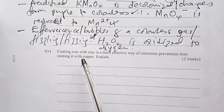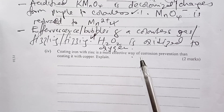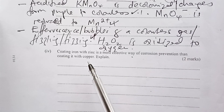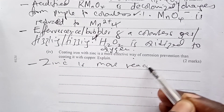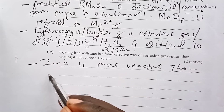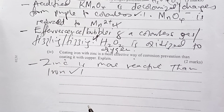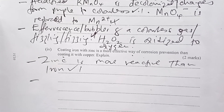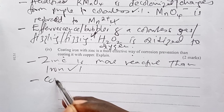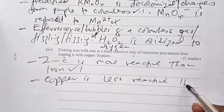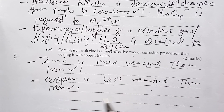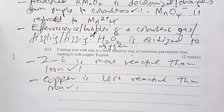Coating iron with zinc is a more effective way of corrosion prevention than coating it with copper. Explain. The answer is very simple: zinc is more reactive than iron — that is one mark. And copper is less reactive than iron — that is your second mark. You get your two marks and pass chemistry. With that, we have come to the end of our video where we have revealed, yet again, a topic that never misses, and this is electrochemistry.